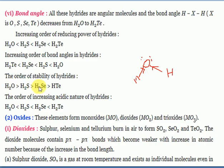The order of stability of hydrides: water is most stable because of hydrogen bonding. Going down the group, hydrogen bonding becomes weaker, and when hydrogen bonding is weak, the hydride acts as a stronger acid.